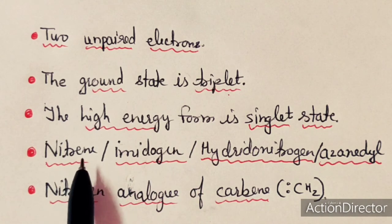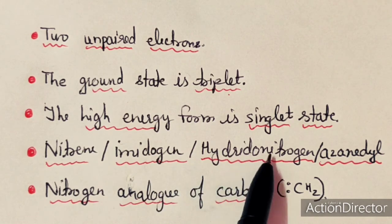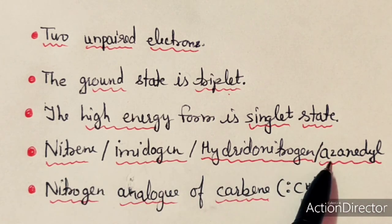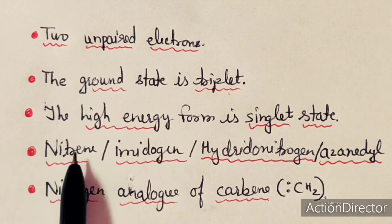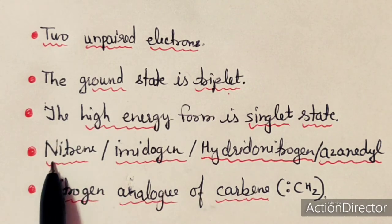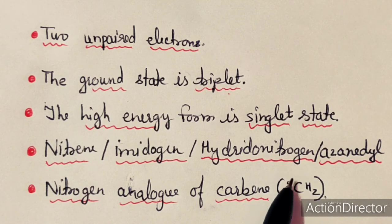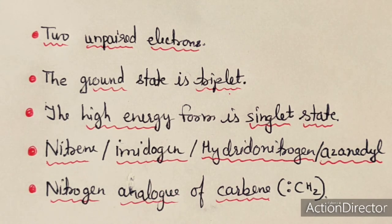This free radical can also be called as nitrene, imidogen, hydrodonitrogen, or azanidyl. These are the other names of the imine radical. It is called nitrene because it is analogous to carbene — it is the nitrogen analog of carbene. Just like carbene, it is also having two unpaired electrons, so carbene is a diradical and this imine is also a diradical.